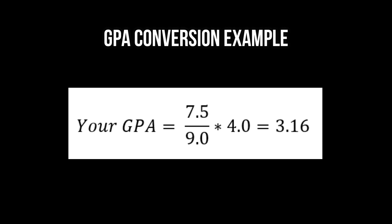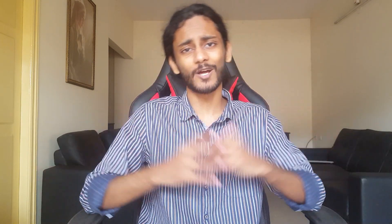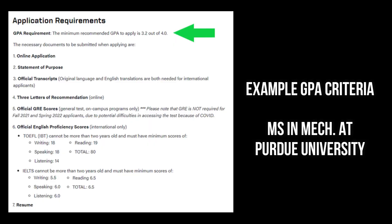How accurate is this? Not really that accurate. As I've stated many times, there's no accurate way to convert your CGPA into a GPA because the two things are not calculated equally — it's just not an equal conversion. But this is sort of a rule of thumb you can use to figure out roughly where your GPA stands.